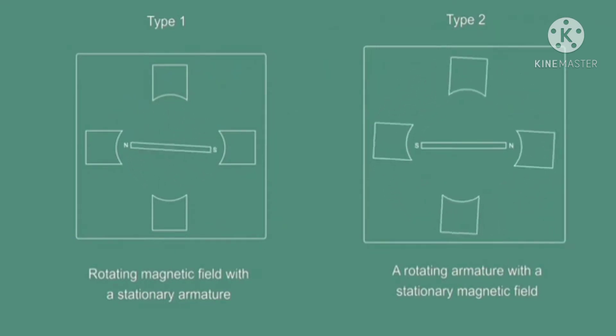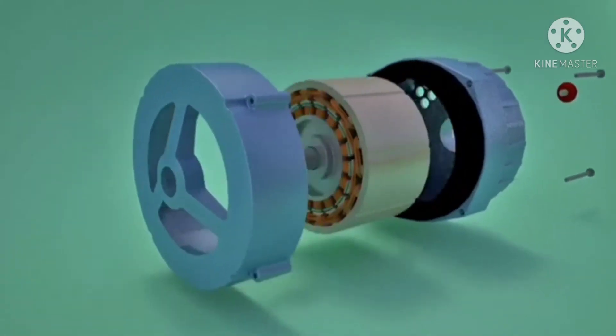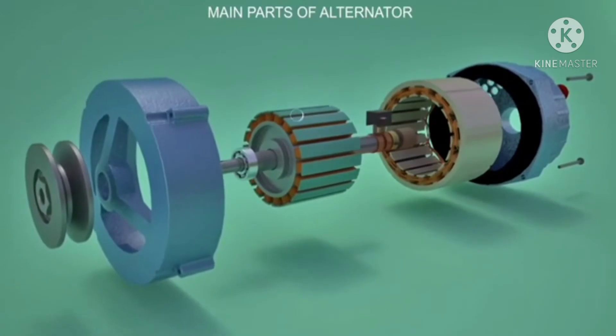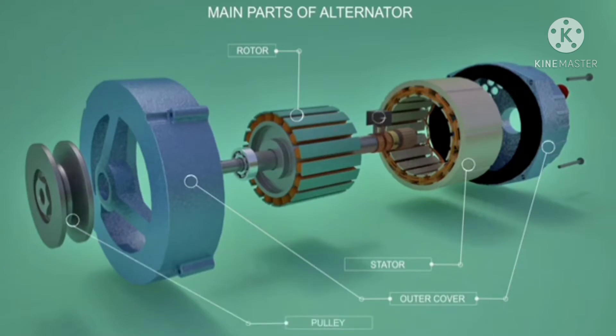Type 1: rotating magnetic field with a stationary armature. Type 2: a rotating armature with a stationary magnetic field. Most alternators use a rotating magnetic field with a stationary armature. Main parts of the alternator are rotor, stator, outer cover, pulley, regulator, bearing, slip rings, and DC generator.